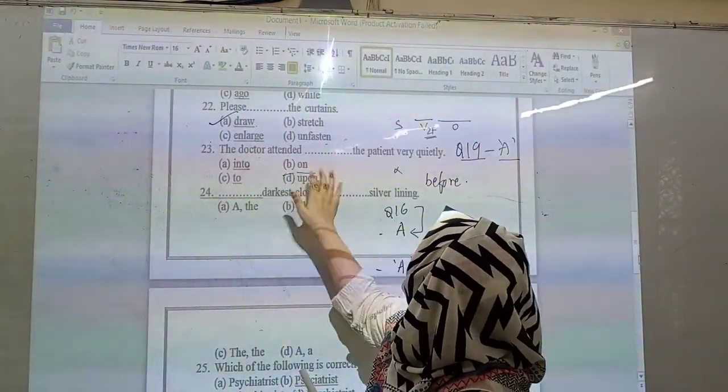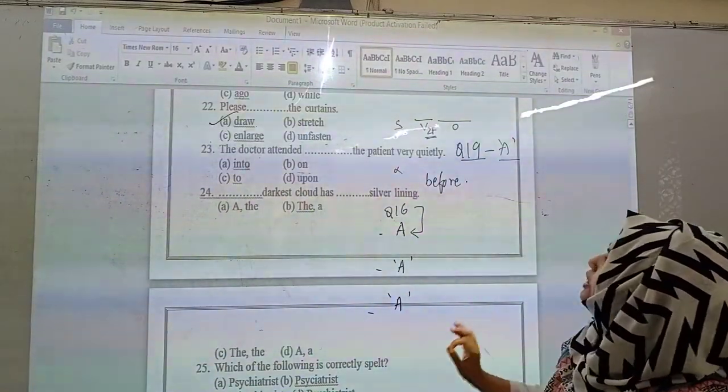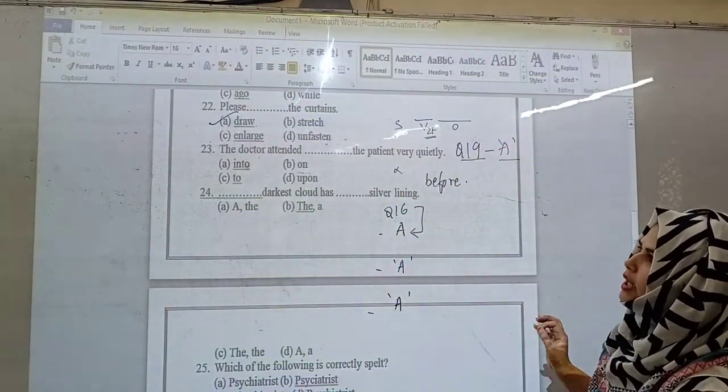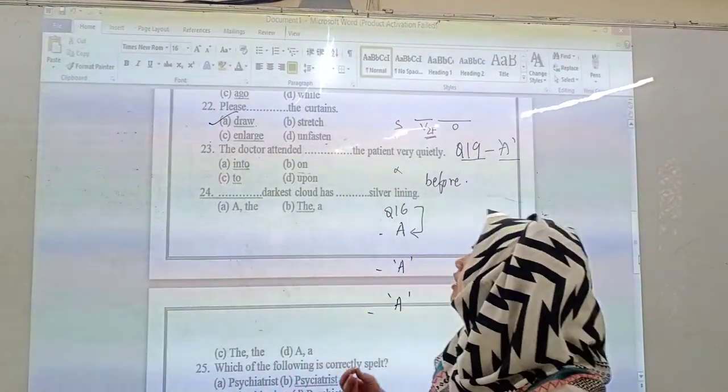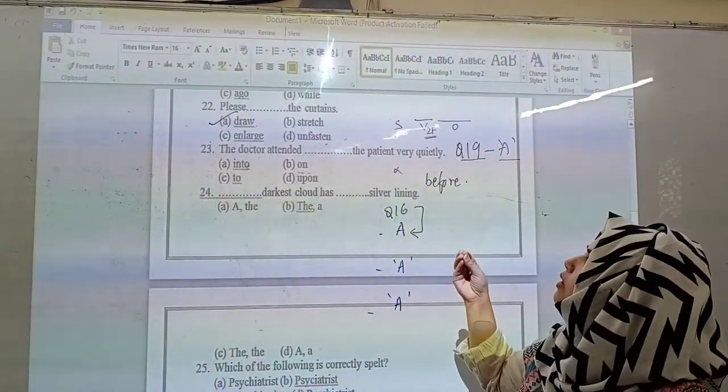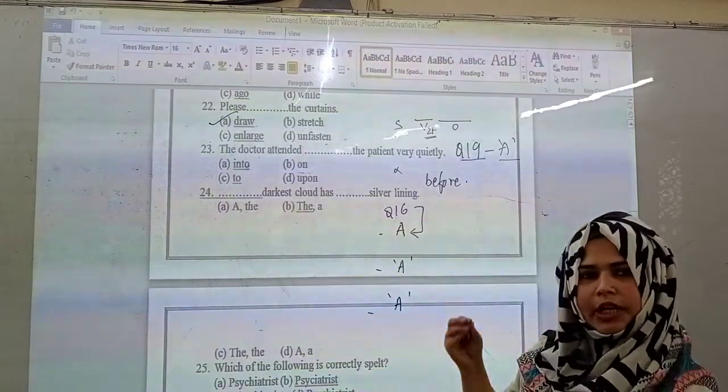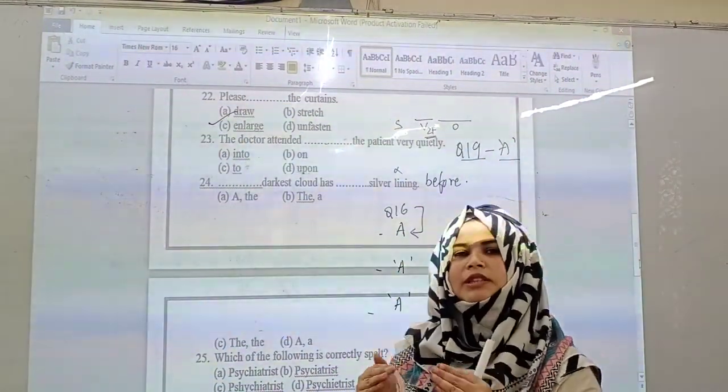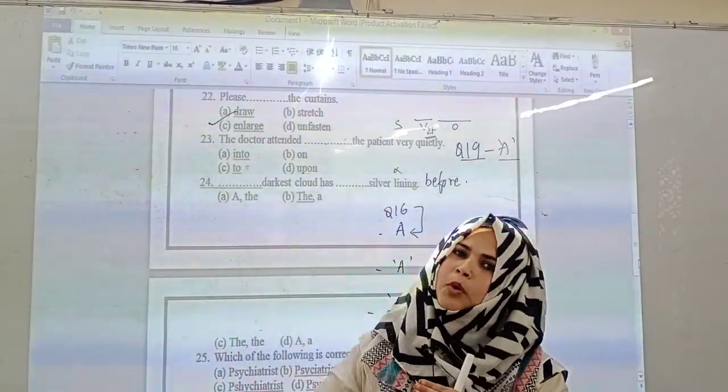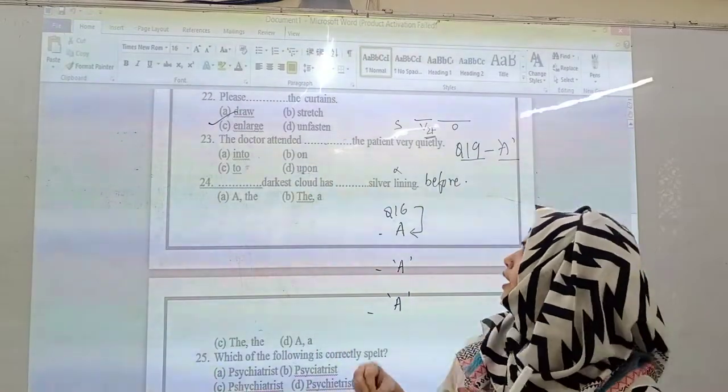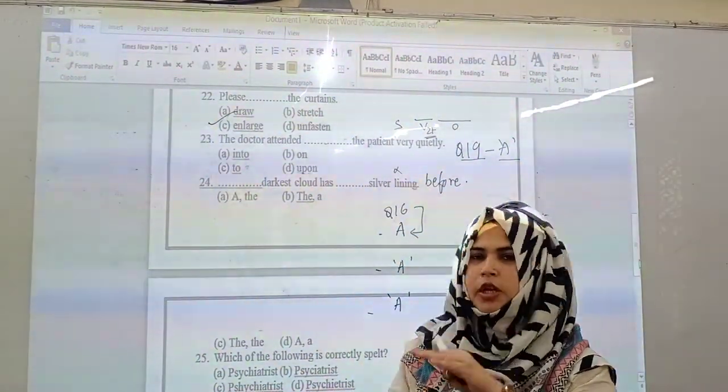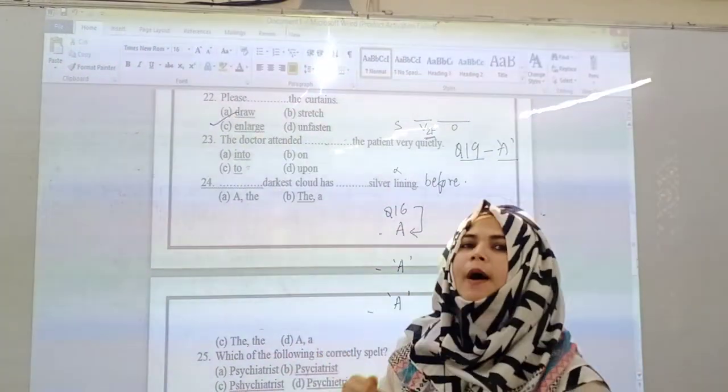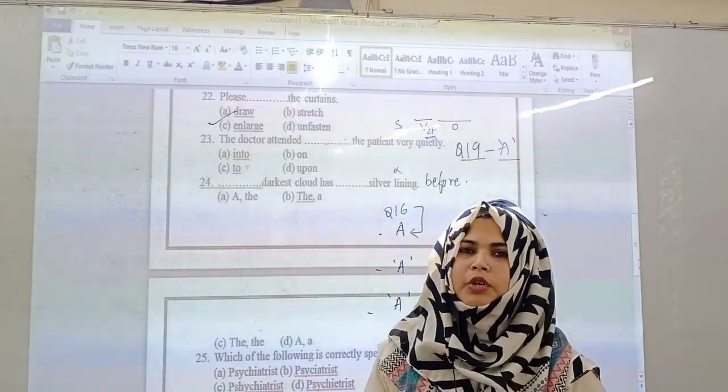Then: the doctor attended dash the patient very quietly. The doctor is attending to the patient. Into the patient? Into is used when the object or subject is in motion, when something is happening. On the patient? That's not on a surface. To the patient? Upon the patient? Upon will be used as...